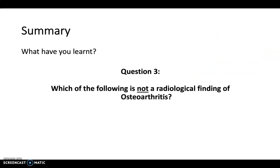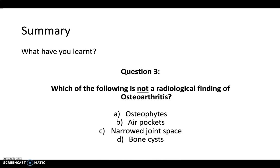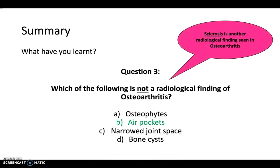Finally, which of the following is not a radiological finding of osteoarthritis — osteophytes, ear pockets, narrow joint space, or bone cysts? The answer is ear pockets. The other radiological finding to be aware of is sclerosis, which is classically seen in osteoarthritis. That concludes this pathophysiology video — thanks for watching, take care.